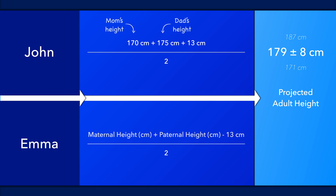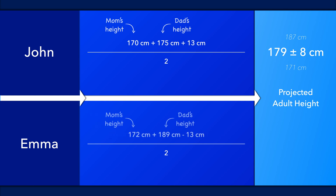Now let's estimate the height potential of a girl named Emma. Her mom is 172 centimeters tall and her dad is 189 centimeters tall. After entering these values into the equation for mid-parental height, we find that her target height is 174 centimeters. With a genetic target height range of 8 centimeters above or below this value, her adult height will likely be between 166 and 182 centimeters.